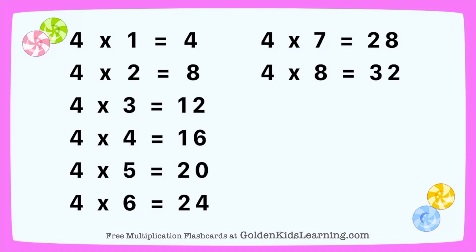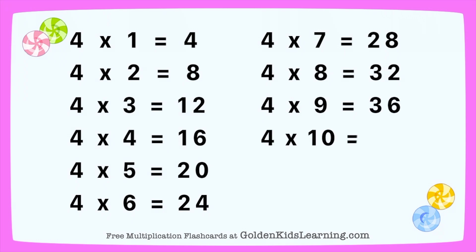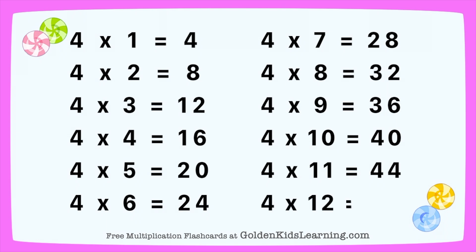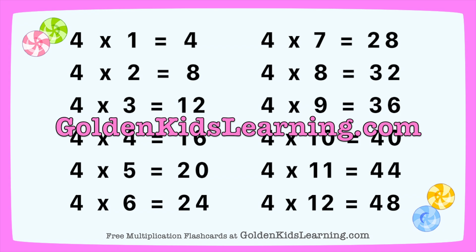4 times 9 equals 36. 4 times 10 equals 40. 4 times 11 equals 44. 4 times 12 equals 48.